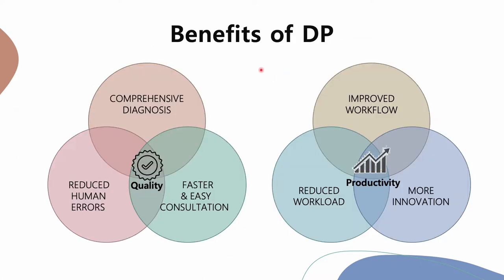Because of this climate change in the industry, the need for digital pathology is getting bigger. DP can improve quality by allowing more comprehensive diagnosis, reducing human errors with faster and easier consultation and archive review. Because DP is based on an automated sample tracking system such as barcode or QR code, it improves workflow, reduces workload and human errors, serves as a platform for innovative technologies such as AI, and ultimately increases the productivity of diagnostic services.